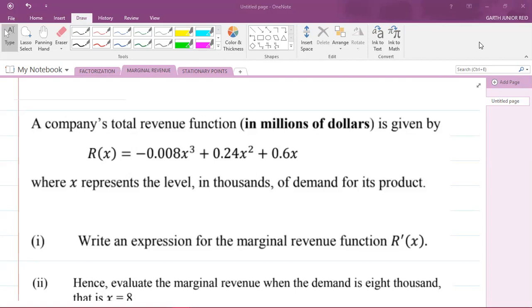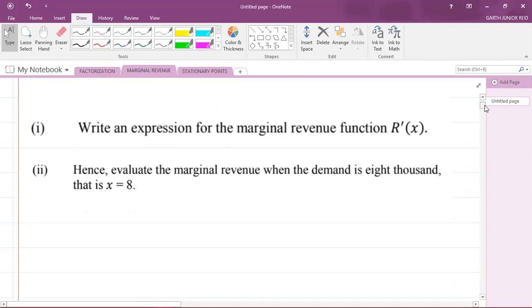Here the question says a company's total revenue in millions of dollars is given by R(x) equals negative 0.008x cubed plus 0.24x squared plus 0.6x, where x represents the level in thousands of demand for its product. In part one, we have to write an expression for the marginal revenue function R'(x), and part two says hence evaluate the marginal revenue when the demand is 8,000, that is when x equals 8.